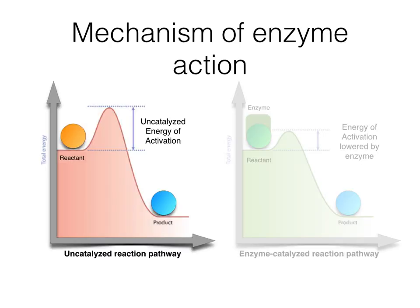How do enzymes work? Any reactant and any product would have a corresponding free energy. For the reaction to proceed, the free energy of the product should be less than the free energy of the reactant for the reaction to be spontaneous. When we say spontaneous, however, it doesn't necessarily mean that it will proceed right away. The rate at which the reaction will proceed depends on the energy of activation — that is the energy difference between the free energy of the reactant versus the free energy of the transition state shown by the peak of the curve. This energy barrier must be overcome by the reactant for the reaction to proceed, and the higher it is, the more time it would take.